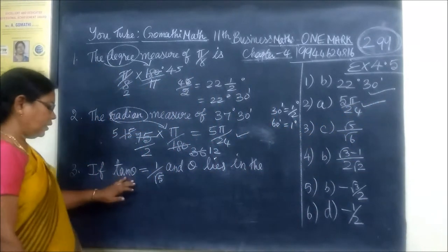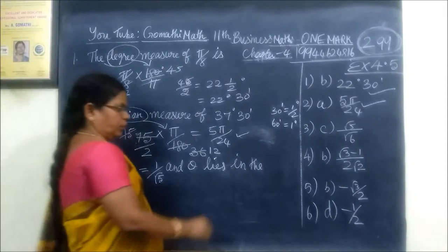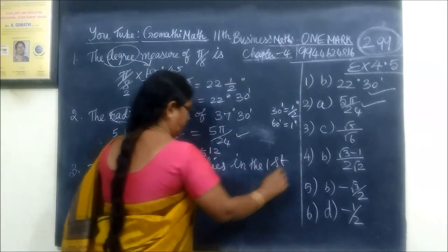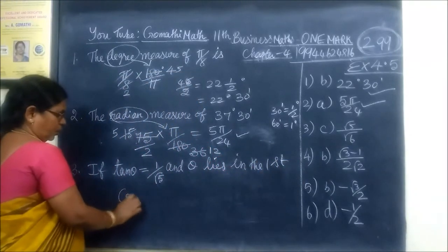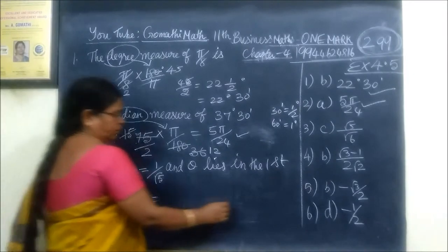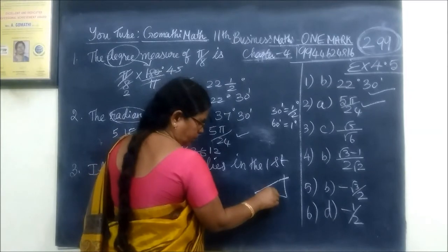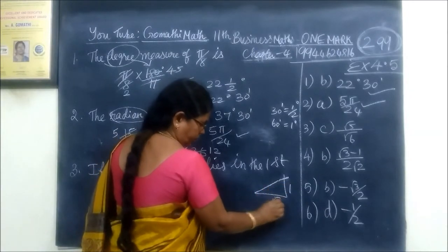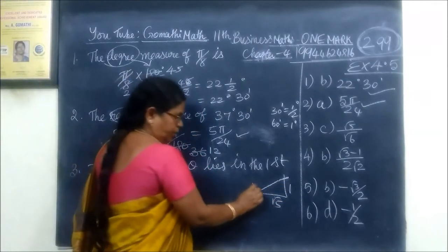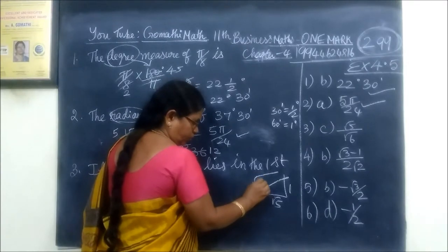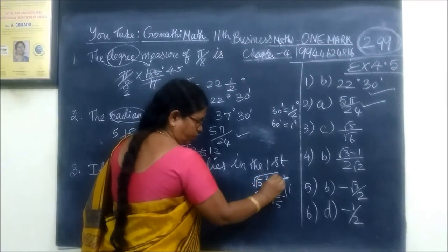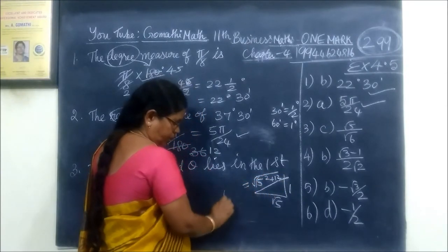The answer is tan theta is equal to 1 by root 5, theta lies in the first quadrant. So you are finding cos theta. Then we place tan theta is the opposite, here is the adjacent, then this is the hypotenuse. What is root 5 square plus 1 square?